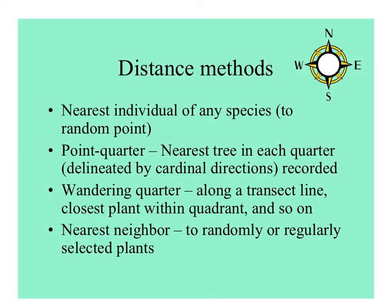A method I like for getting a quick idea of diversity is to use distance methods. You can randomly or haphazardly choose individual plants and then, using a compass, find the nearest plant in each quarter — dividing the plot into four compass directions. This is called the wandering quarter method when done along a transect line. You can also use nearest neighbor, applied to many different species or focused on one species.